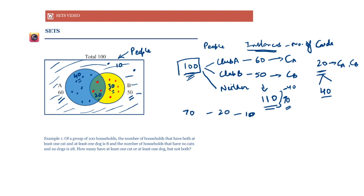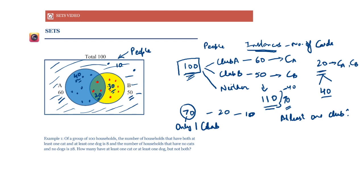If asked how many people belong to only one club, we say: 40 belong to only club A and 30 belong to only club B, so there are 70 people who belong to only one club. If the question is how many people belong to at least one club — meaning they could belong to both, but must belong to at least one — then 40 plus 30 plus 20 gives us 90.